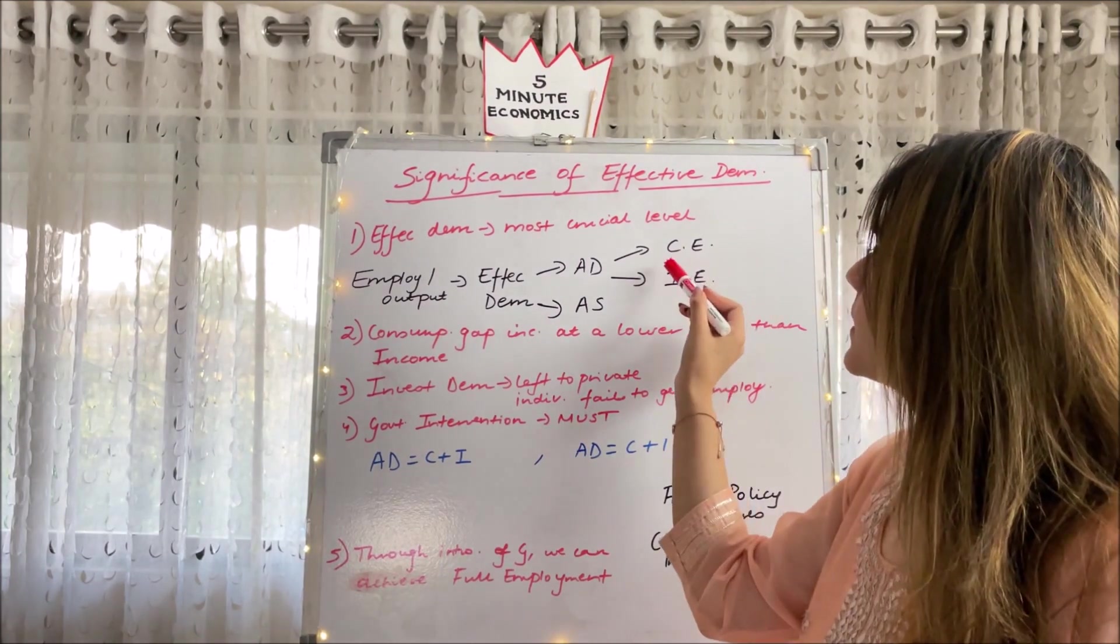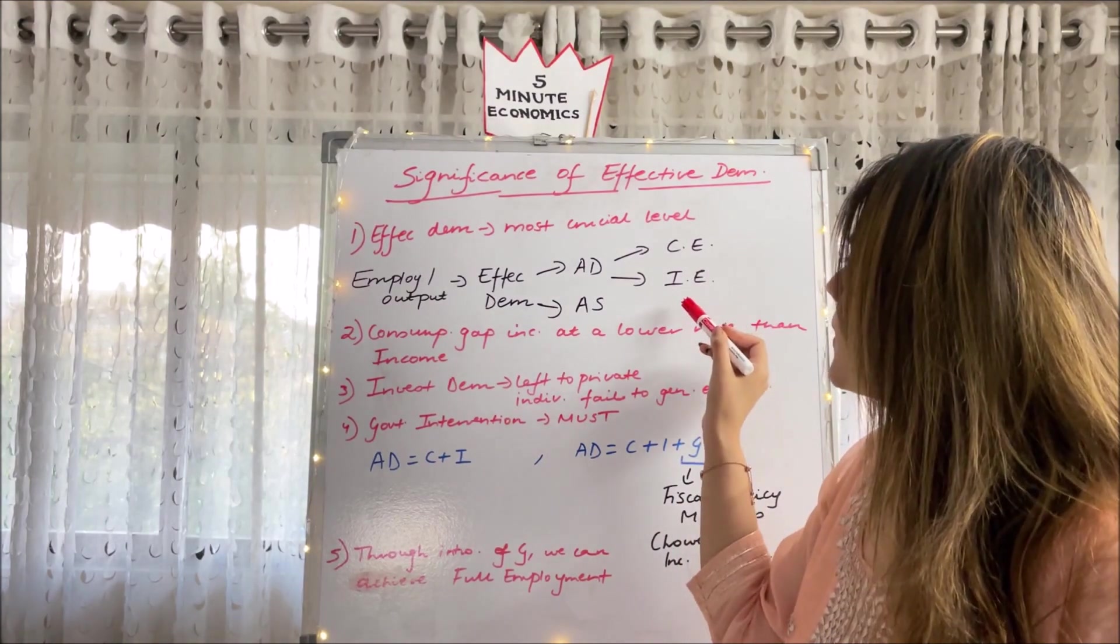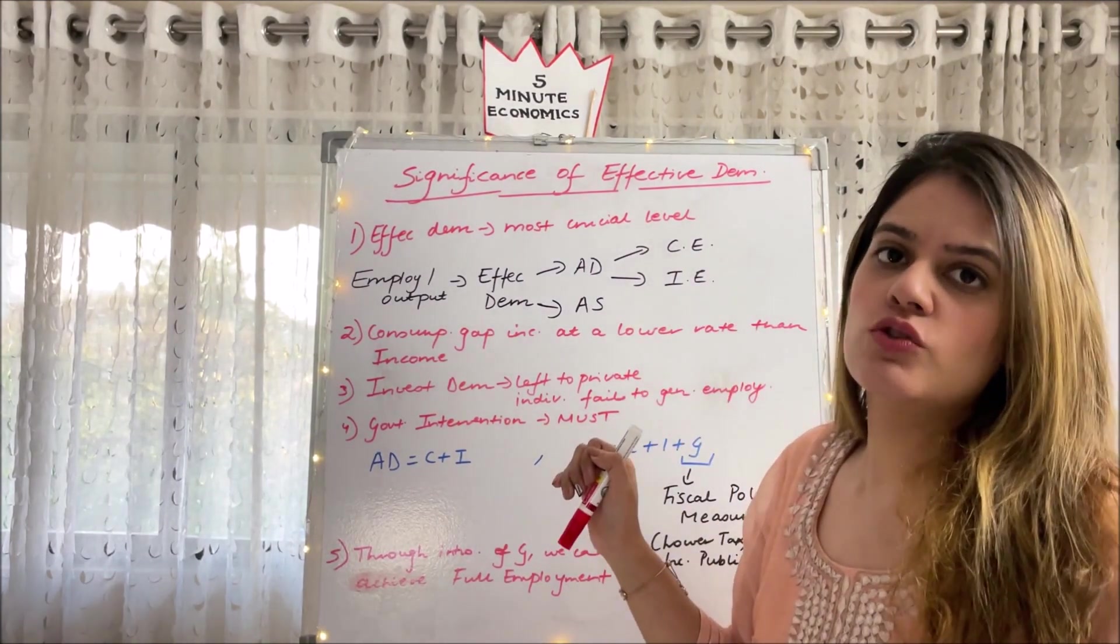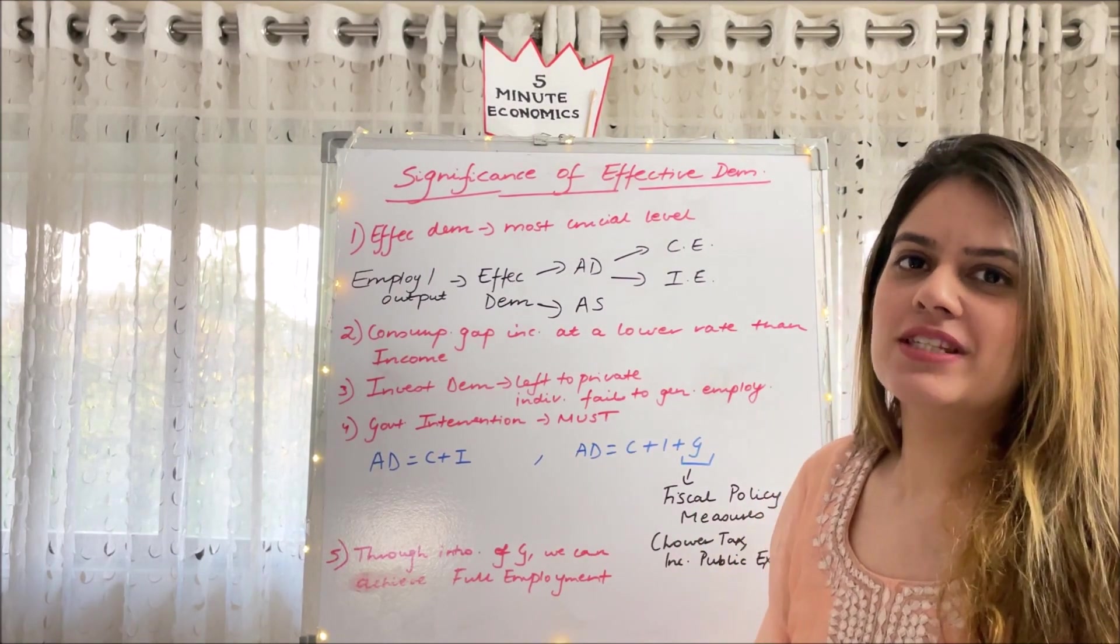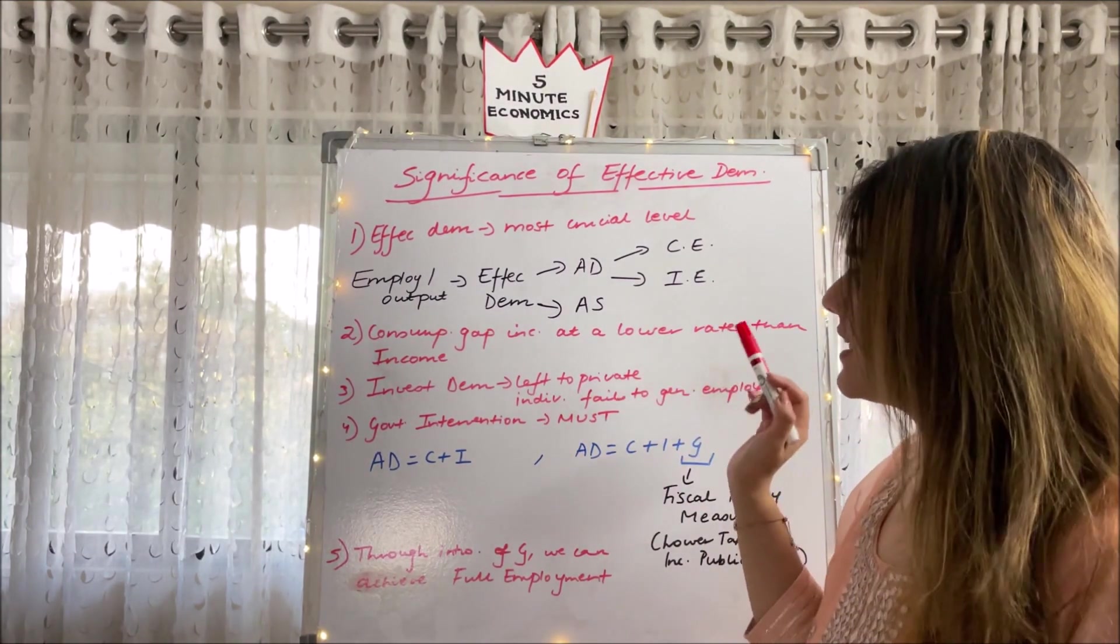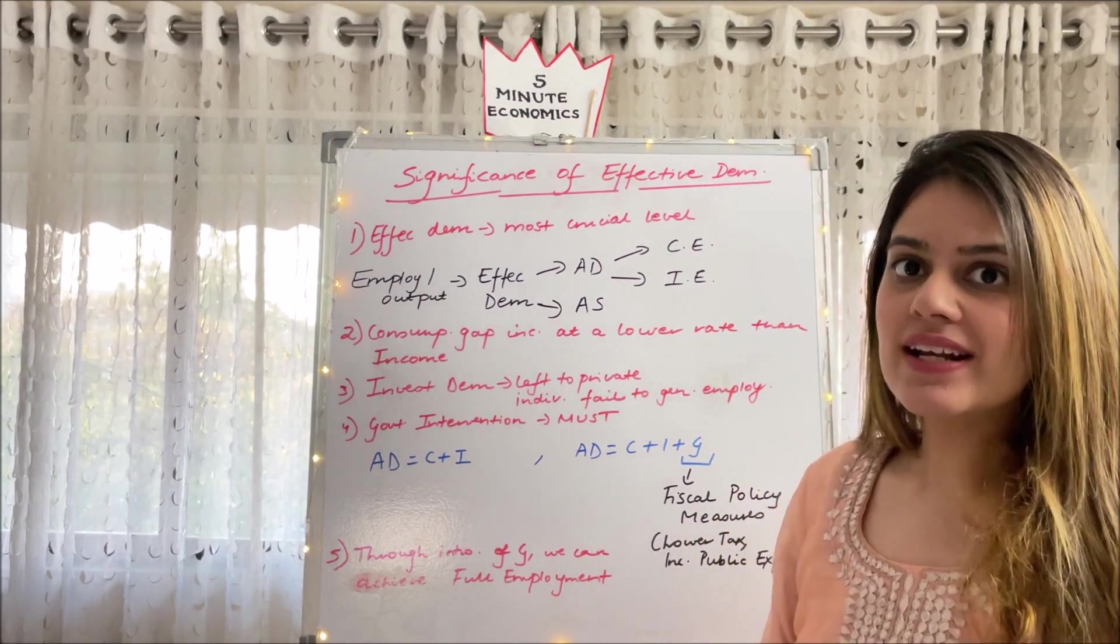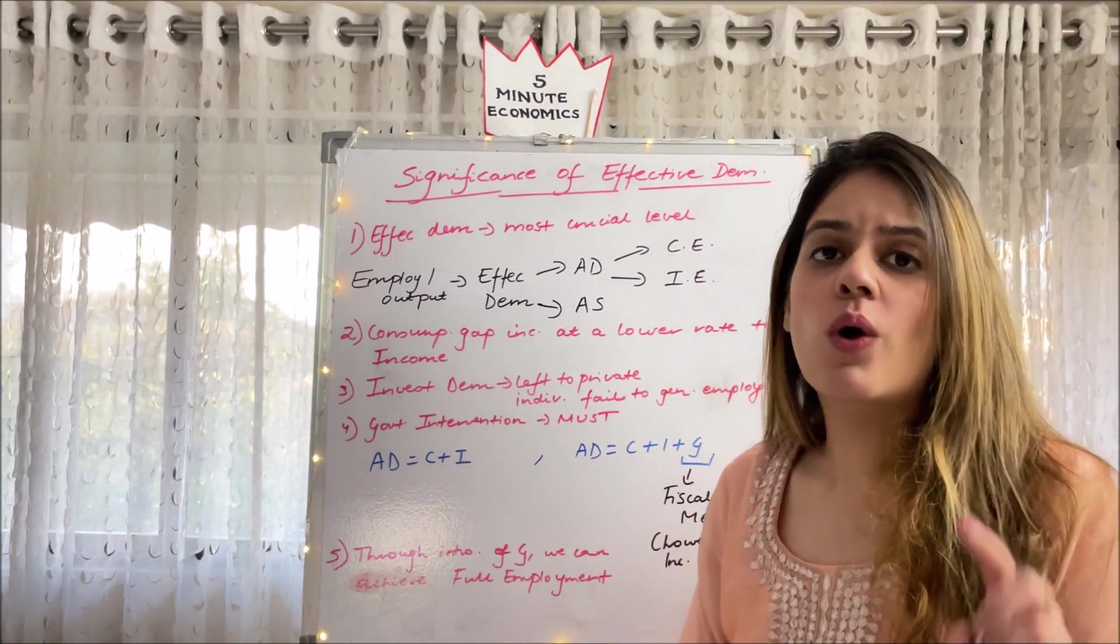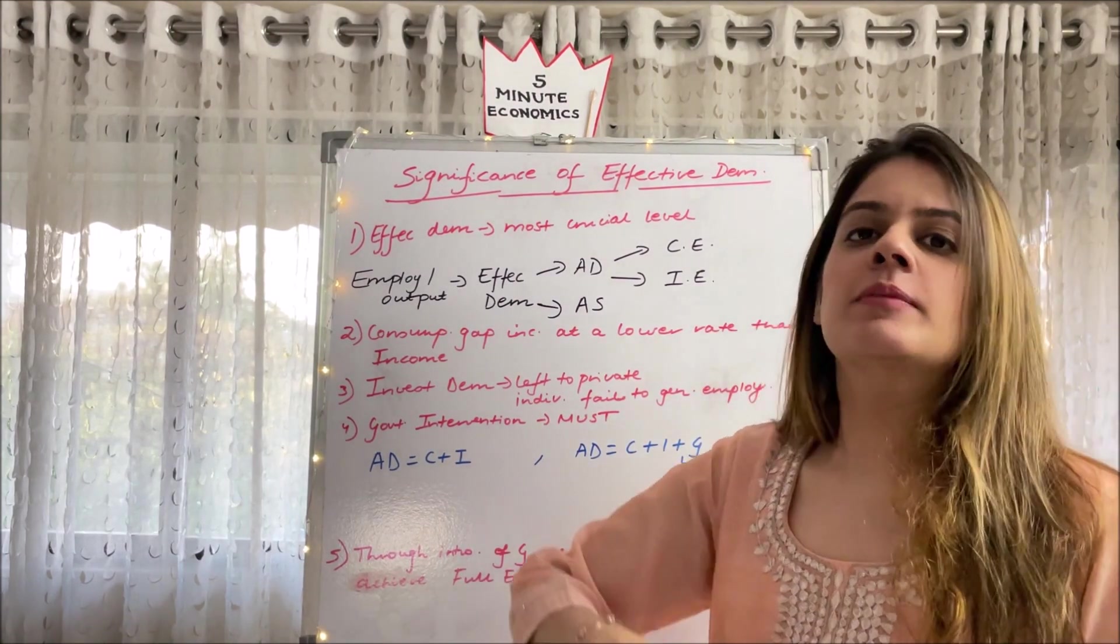Basically, if aggregate demand increases, effective demand increases and output and employment will increase. What is aggregate demand made up of? Aggregate demand is made up of consumption demand or consumption expenditure and investment demand or investment expenditure. I've actually made two separate videos on consumption function and investment function. What happens is that consumption and investment may be, only one's onus lies. Why? Because consumption gap is created.